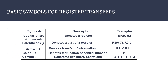Here we summarize the basic symbols for register transfer language. First, registers are denoted by capital letters and numerals — for example, MAR for memory address register and R2 for register number 2. Second, parentheses are used to denote a part of a register: we can write L for lower-order bits or specify a range of bits such as R2(0:7) to indicate only bits 0 through 7.